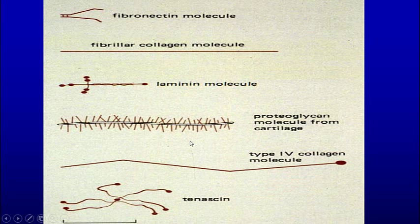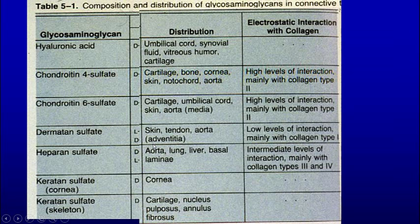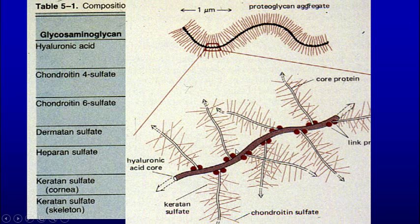Here we see the fibronectin molecule binding to a fibronectin receptor, as well as type 4 collagen molecules and different types of collagen. The glycosaminoglycans include hyaluronic acid, chondroitin sulfate, chondroitin 6-sulfate, dermatan sulfate, heparan sulfate, and keratan sulfate. You can see where they're distributed — in the cornea of the eye, cartilage, and other locations — with high levels of interaction mainly with type 2 collagen in these locations. So again: hyaluronic acid core with protein cores and chondroitin sulfates on the side chains of the core protein.